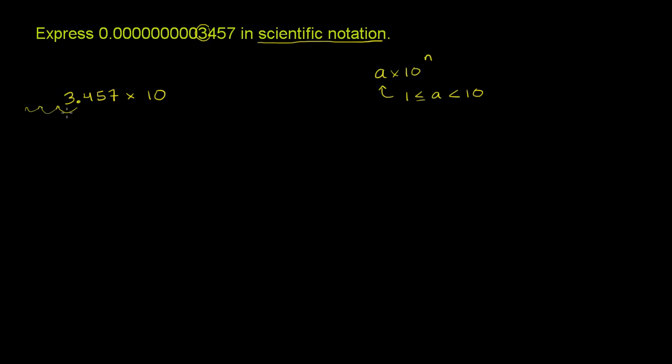To do that, we're essentially making the number much, much, much smaller. So we're not going to multiply it by a positive exponent of 10, we're going to multiply it times a negative exponent of 10. The equivalent is, you're kind of dividing by a positive exponent of 10. And so the best way to think about it...